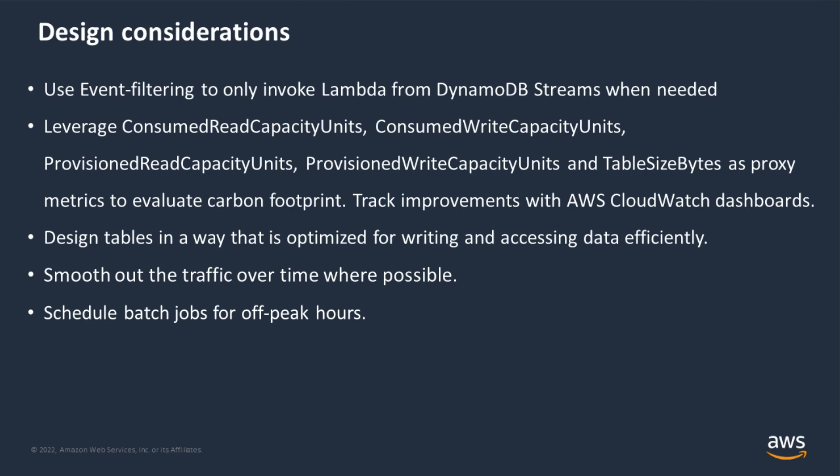We want to monitor consumed capacity units and provisioned capacity units for both reads and writes in our application, and we can use these as proxy metrics to understand the carbon efficiency of our application. The lower we can drive our consumed capacity, the lower our carbon impact. We also want to optimize writing and accessing data to be as efficient as possible, since writing more data than necessary or reading data inefficiently uses additional resources. Try to keep your traffic patterns as smooth as possible, as spiky workloads can be harder to provision for, which means additional resources used.